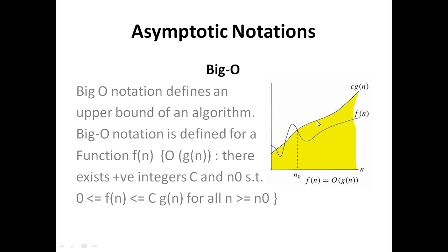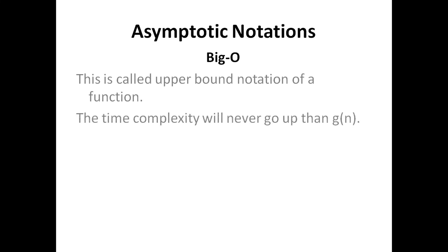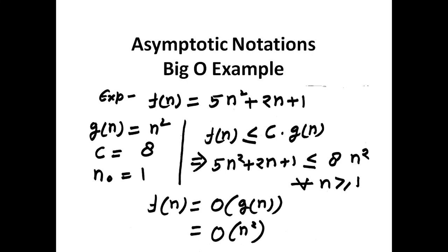If c·g(n) is always higher than f(n) from n₀ onwards, we can write f(n) = O(g(n)). This is called the upper bound of a function — the time complexity will never go above g(n), where g(n) is another positive function.